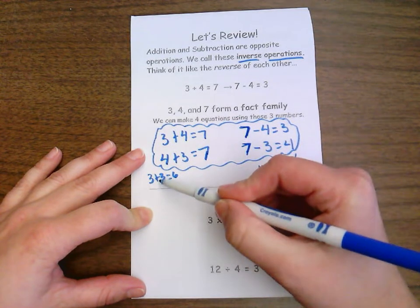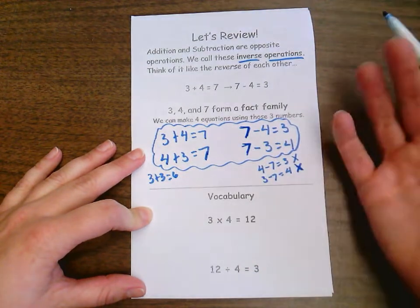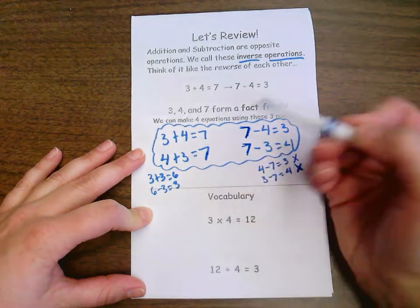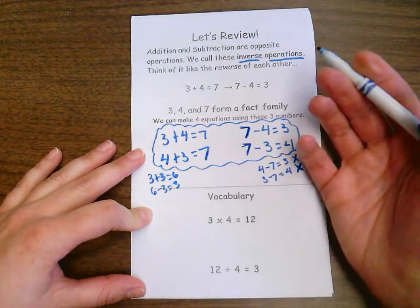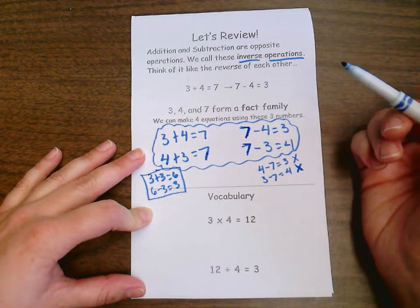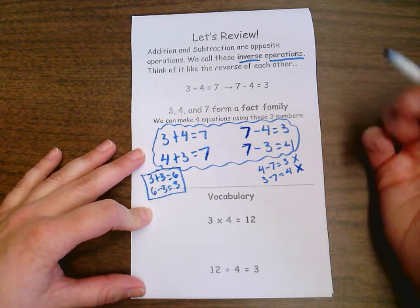If I were going to switch those two addends around, it would be the same thing. And then subtracting six minus three equals three. Again, if I switch those two numbers around, I'd still have the same exact equation. So in that case, we only have two equations in our fact family, just a smaller family.